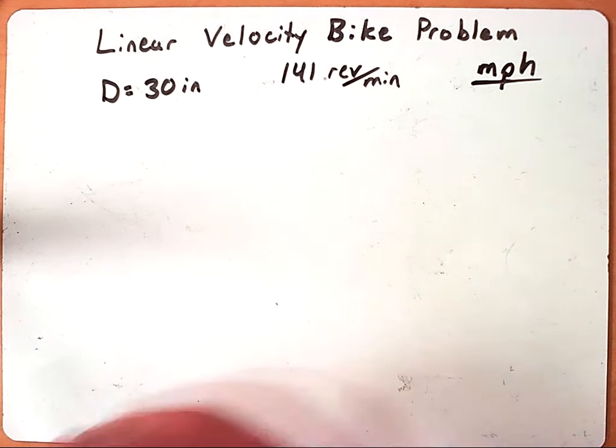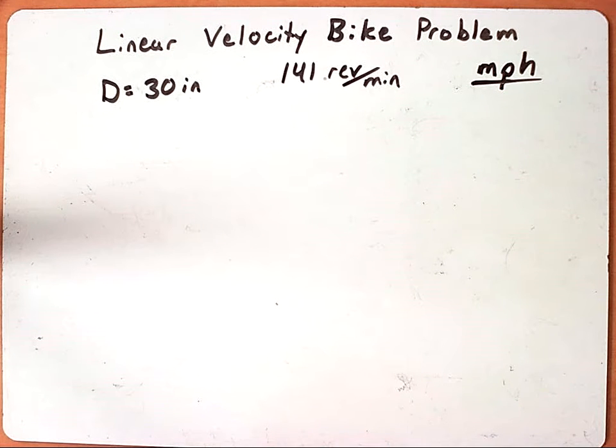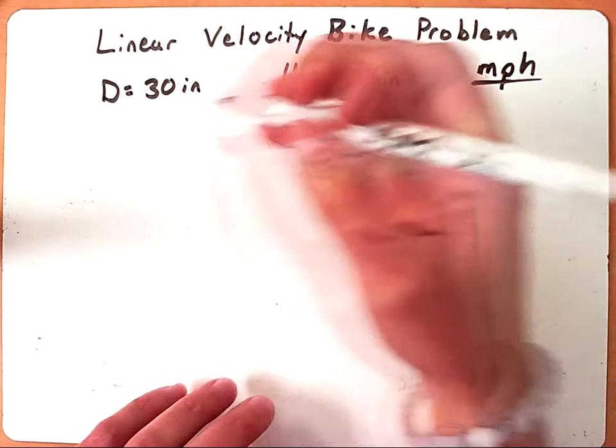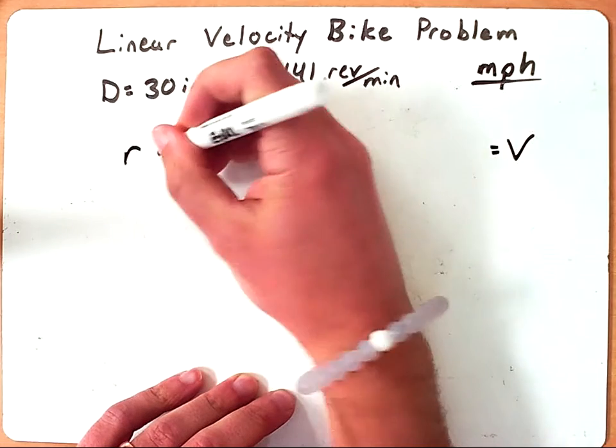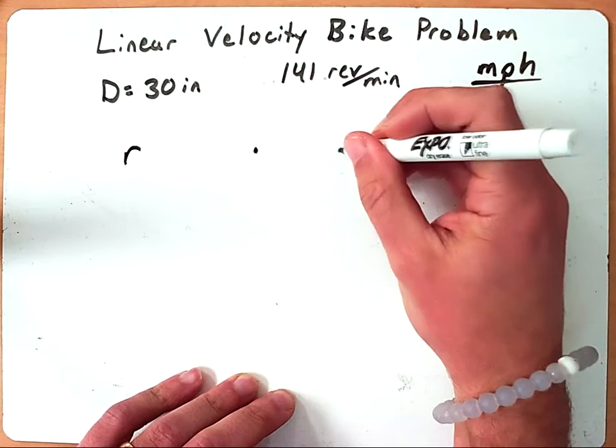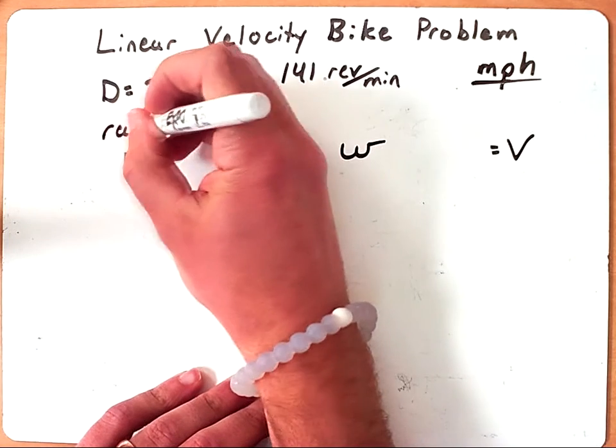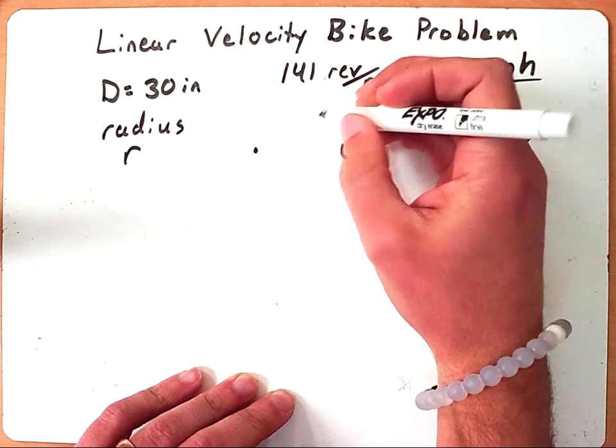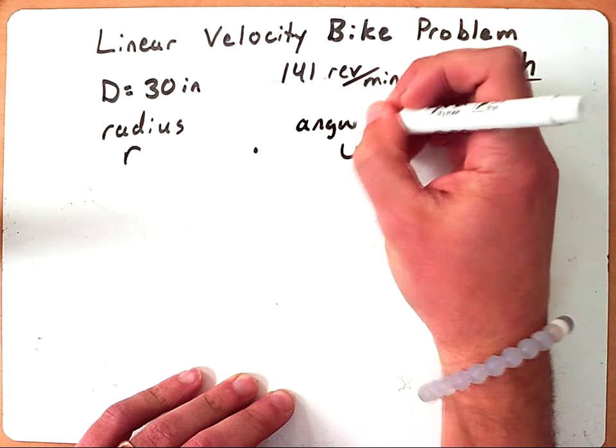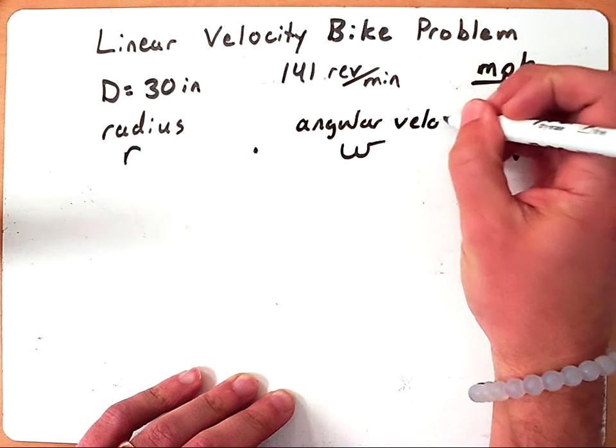So we can use linear velocity to solve this problem. We're going to have to convert a few units as we go, but that's alright. We'll use dimensional analysis or train tracks to help us keep all that in order. So we need to remember that linear velocity is going to equal r times ω, where r is the radius and ω, or omega, is the angular velocity.